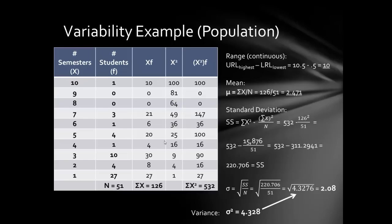Here is a worked example using a frequency distribution table. If we're looking at the number of semesters among a population of 51 students, the range uses upper and lower real limits because number of semesters is a continuous variable — you could be at NSC for 1.5 or 10.3 semesters. The highest score is 10, the lowest is 1, so: 10.5 minus 0.5 equals 10 for the range.